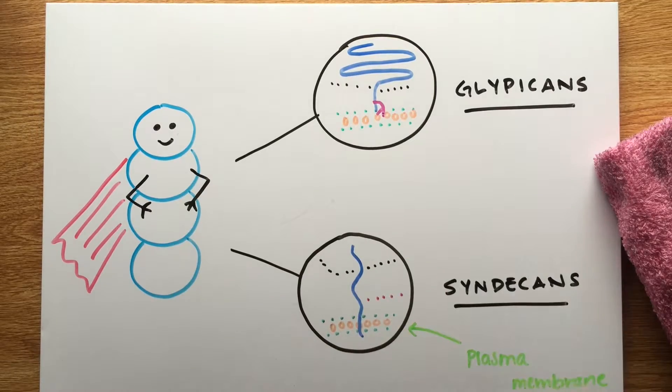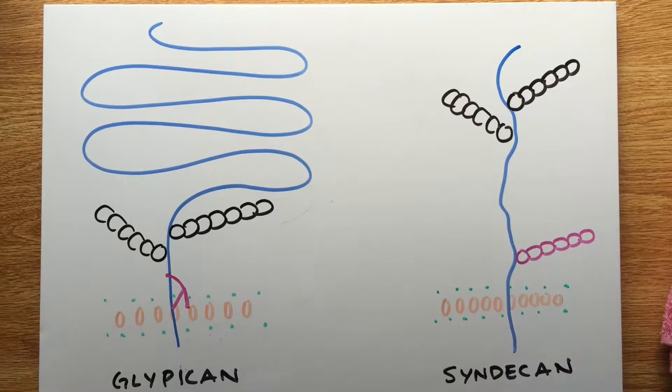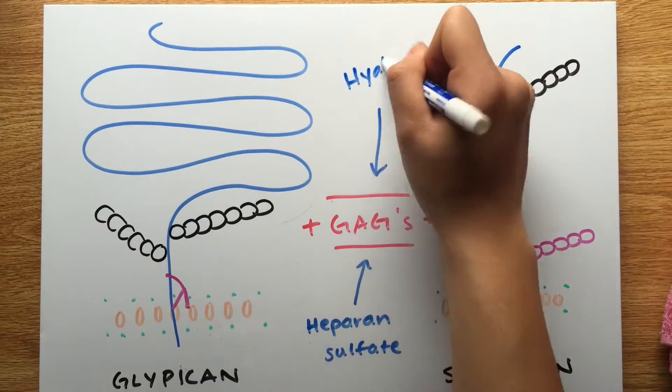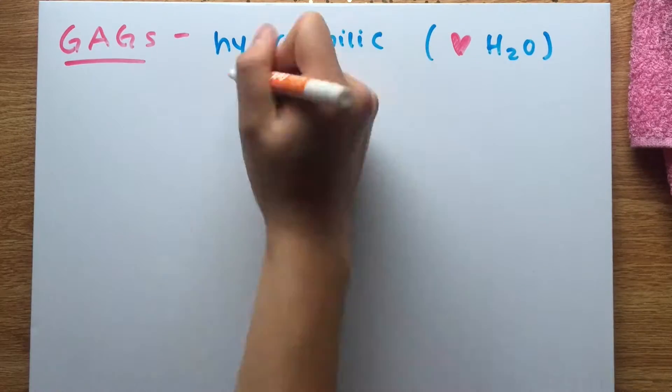GAGs are characterized by disaccharide units that give rise to components like heparin sulfate and hyaluronic acid. They're also very polar and therefore hydrophilic, making them good lubricants and shock absorbers.